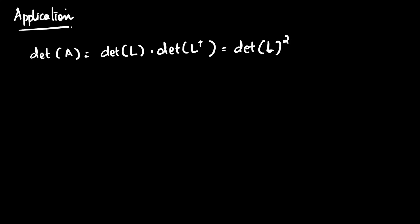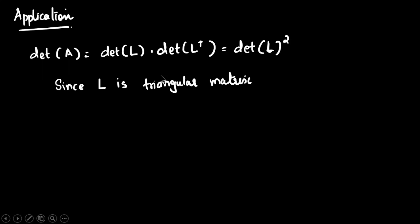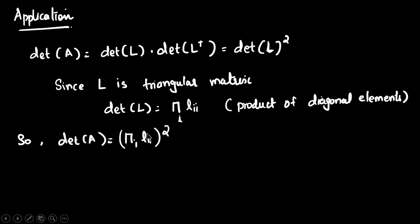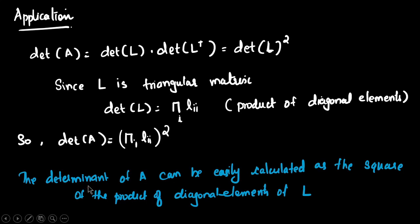An application of Cholesky decomposition is finding the determinant of A. We can write det(A) = det(L) × det(Lᵀ) = [det(L)]². Since L is a triangular matrix, its determinant is simply the product of its diagonal elements. Therefore, det(A) equals the square of the product of the diagonal elements of L, reducing matrix determinant computation to simple multiplication.